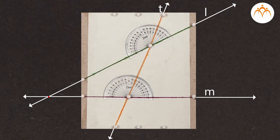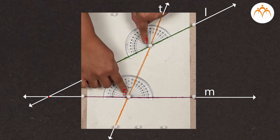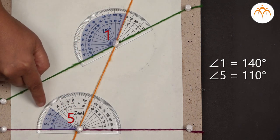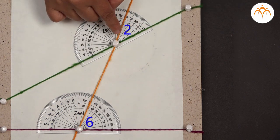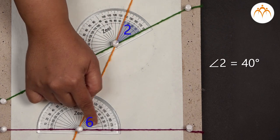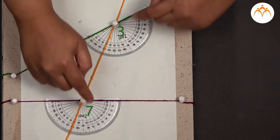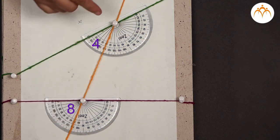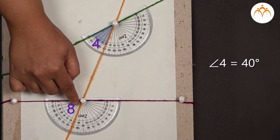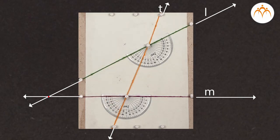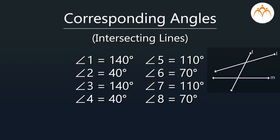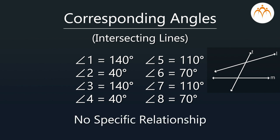Let us measure the first pair — angle 1 and angle 5 — with a protractor. Angle 1 measures 140 degrees and angle 5 measures 110 degrees. Similarly, angle 2 measures 40 degrees and angle 6 measures 70 degrees. Angle 3 measures 140 degrees and angle 7 measures 110 degrees. Angle 4 measures 40 degrees and angle 8 measures 70 degrees. We can see that when a transversal cuts two intersecting lines, we get four pairs of corresponding angles, but there is no specific relationship between the measures of the angles in each pair.